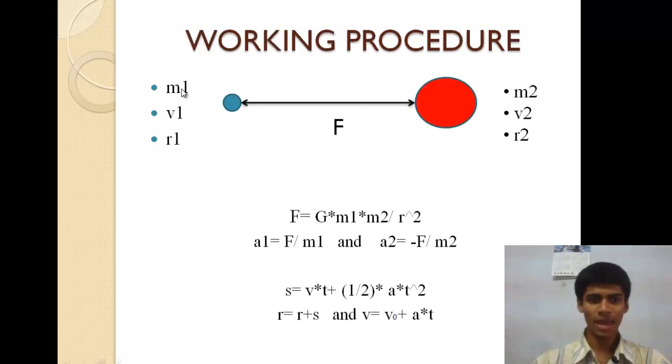Here are the masses, velocities, and position vectors of the two objects. The gravitational force working between them is given by this formula.